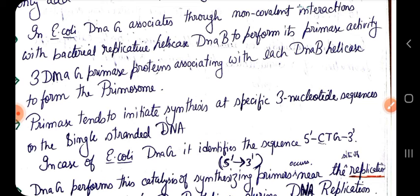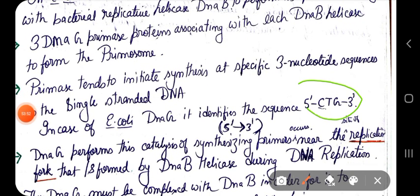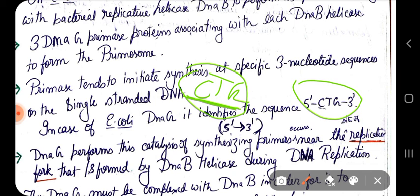Primase tends to initiate synthesis at specific three-nucleotide sequences on single-stranded DNA. It recognizes that three-nucleotide sequence and then initiates its function. In E. coli, DnaG identifies the sequence 5'-CTG-3' — by observing CTG at the parental strand, primase initiates synthesis of its primer on the newly synthesized strand.